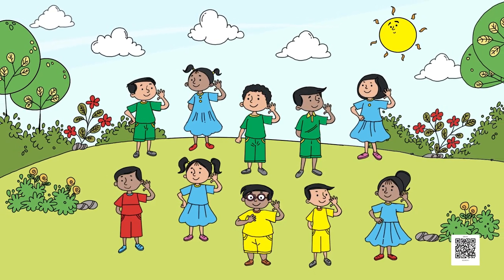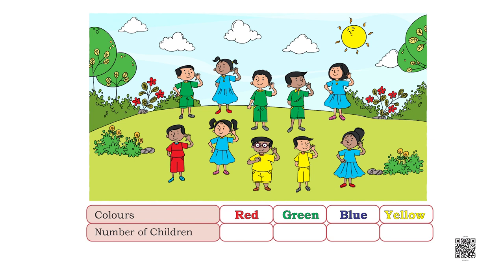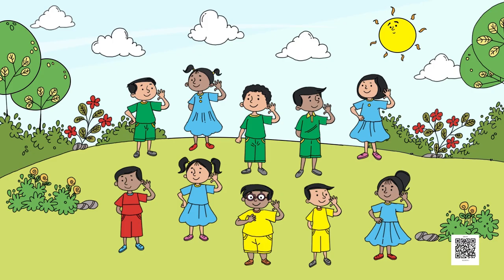There is a table related to the picture. The four columns of the colors row are red, green, blue, and yellow. The next four columns for the number of children are empty. You have to tell the number of children wearing each color and write it in these four boxes.